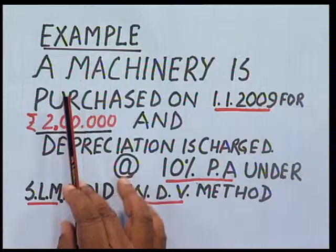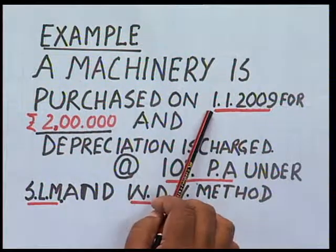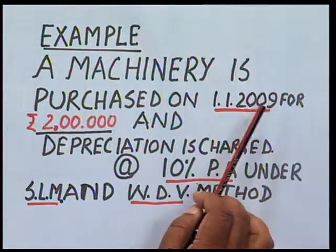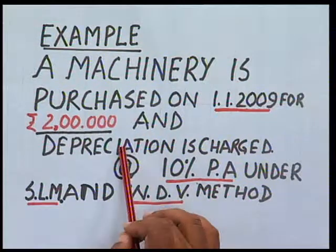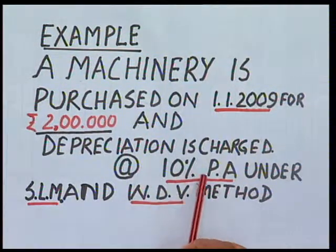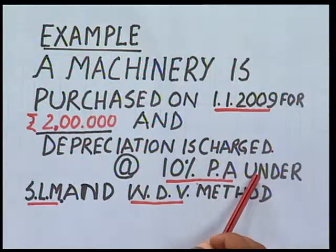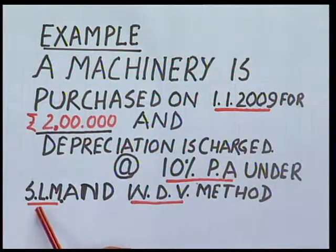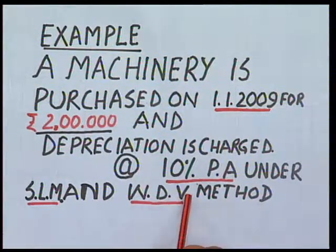Now, after knowing the value of depreciation, we must understand the accounting process. We will take an example and solve it with both methods — the straight line method and the written down value method. There is a machinery purchased on 1st January 2009 for rupees 2 lakh, and the depreciation is charged at the rate of 10% per annum. We have to calculate the depreciation under both methods.